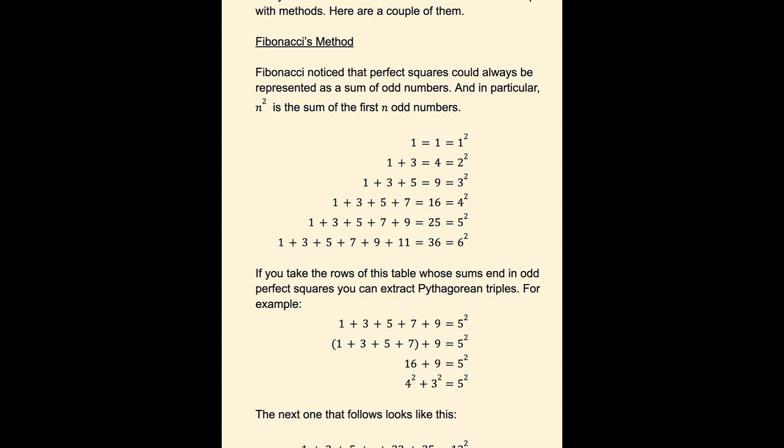So we get 4 squared. And then the 9 is obviously a perfect square, and we have 3 squared. And there's our Pythagorean triple, 3, 4, 5, or 4, 3, 5. The order doesn't really matter too much.